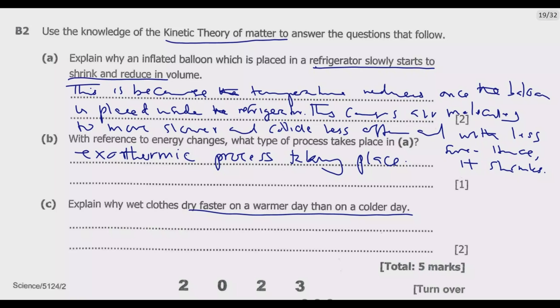Evaporation is the process where liquid water turns into water vapor. So on a warmer day, water molecules in wet clothes gain more kinetic energy from the surrounding heat. This allows them to overcome attractive forces holding them in the liquid and escape as gas, which is water vapor. As a result, wet clothes dry faster.